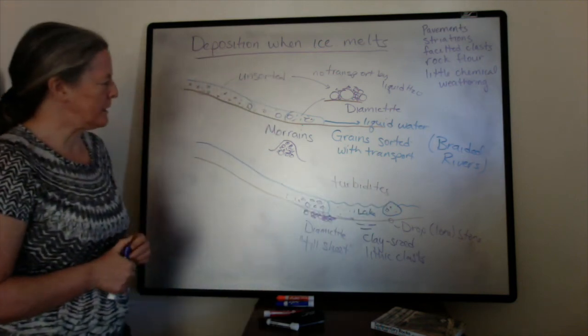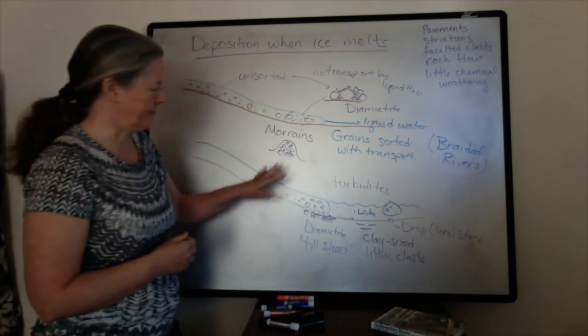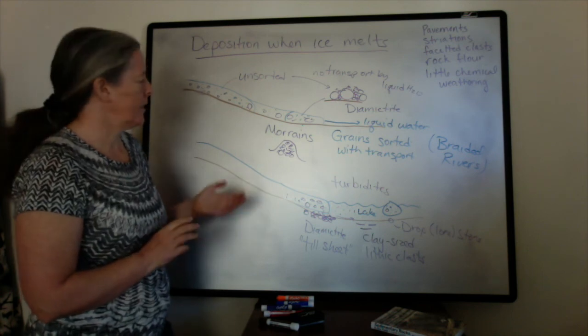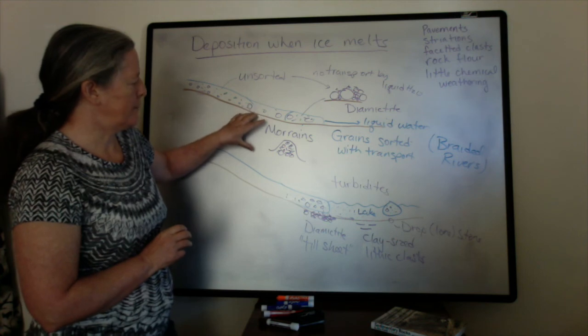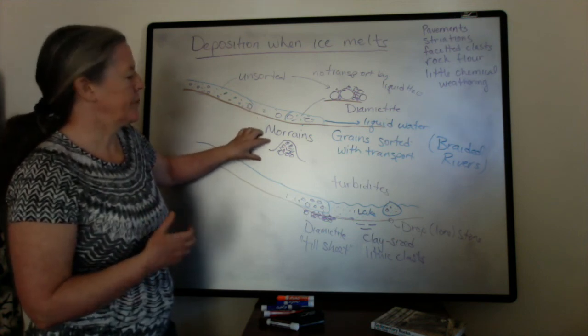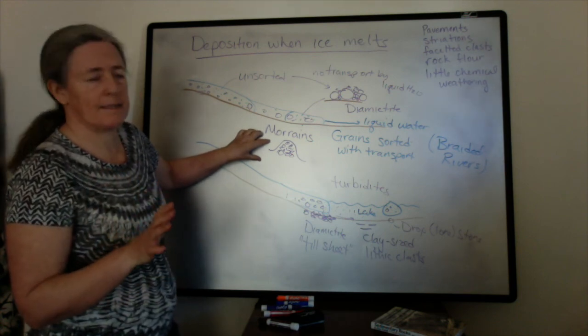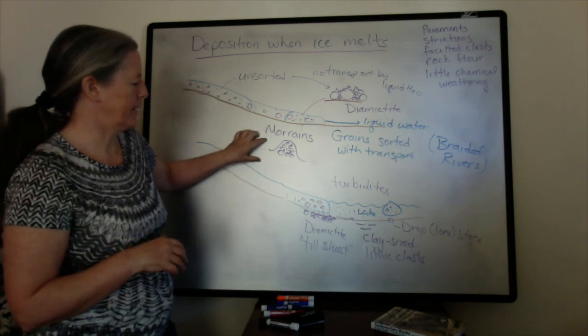So we'll talk about the facies in a later video and I'll summarize the types of deposits that you tend to see. The key points here are that when the ice melts, because it's a laminar flow, it leaves behind unsorted sediment of all the grain sizes from clay size to boulder that the ice is carrying.